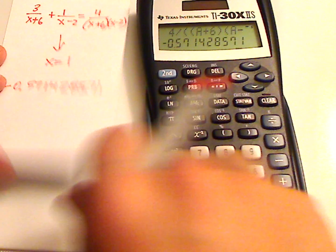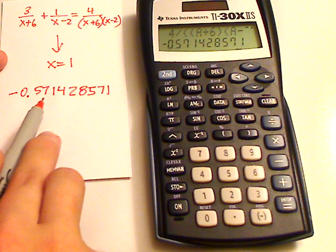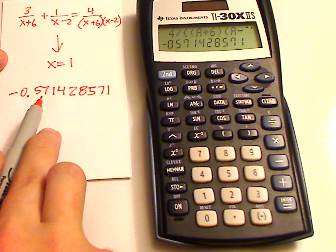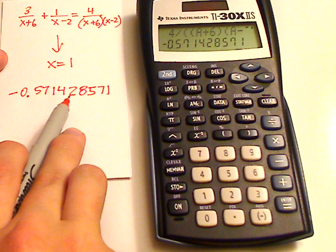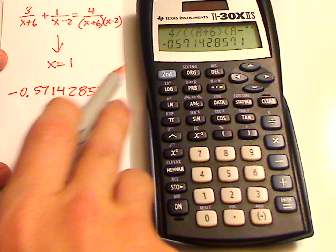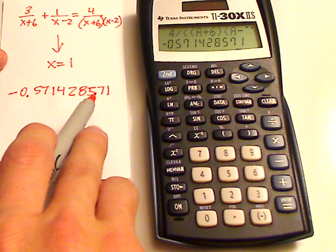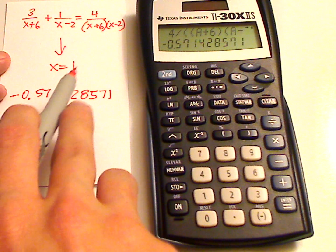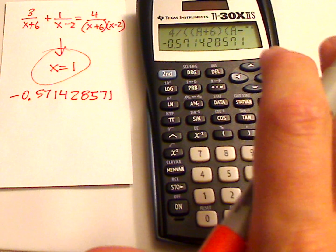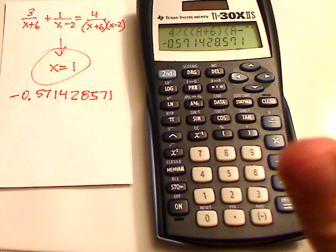You get negative 0.5714285571. Those are equal to each other. So x equals 1, that is a solution. And that's how you use a calculator to check your work. That's it.